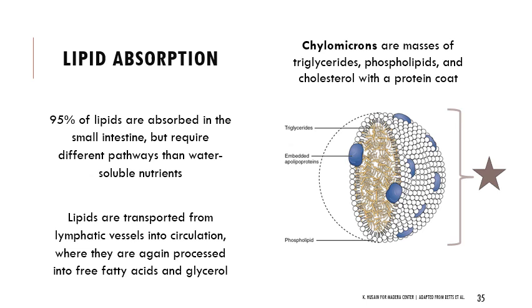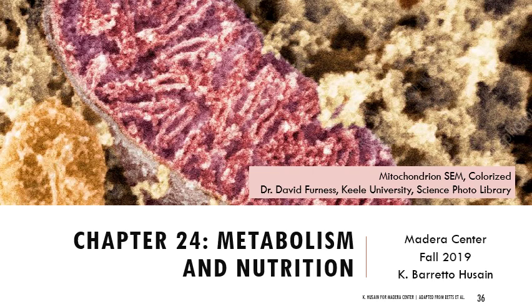Here's the structure of a chylomicron. You can see the triglycerides surrounded by phospholipids — that amphipathic molecule with a hydrophilic head and hydrophobic tails. It's not forming a bilayer the way a cell would, but it still forms a protective structure.